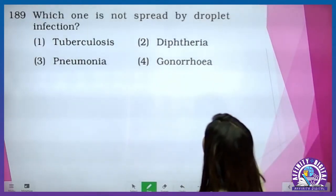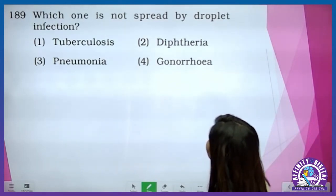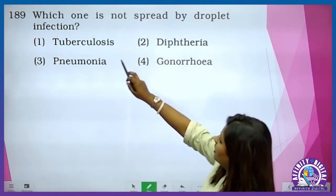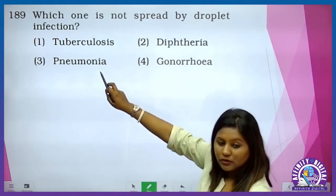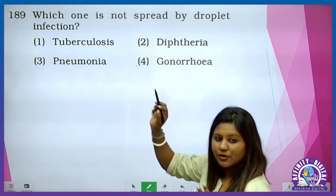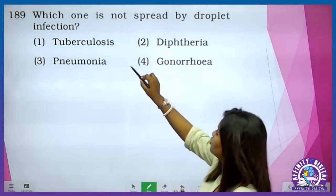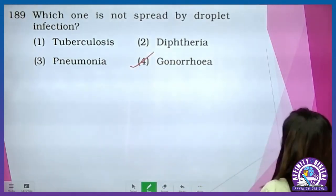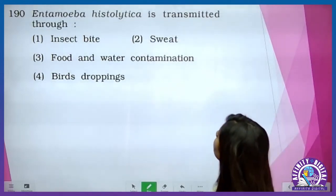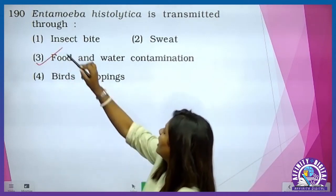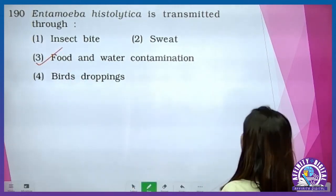Which one is not spread by droplet infection? Tuberculosis, diphtheria, and pneumonia are all respiratory problems — so they spread through droplets. The one that does not is gonorrhea. Entamoeba histolytica is transmitted through food and water contamination.